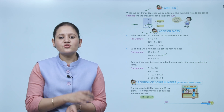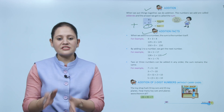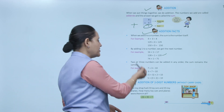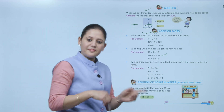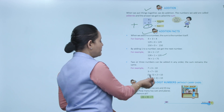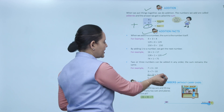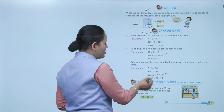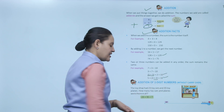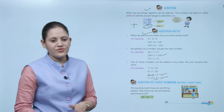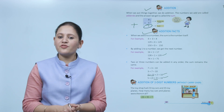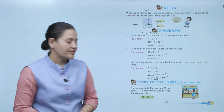Next: two or more numbers can be added in any order and the sum remains the same. Like 7 plus 3 is 10, and 3 plus 7 is also 10. Similarly, 5 plus 3 plus 2 is 10, and if we first add 3 and 2 then add 5, we still get 10.